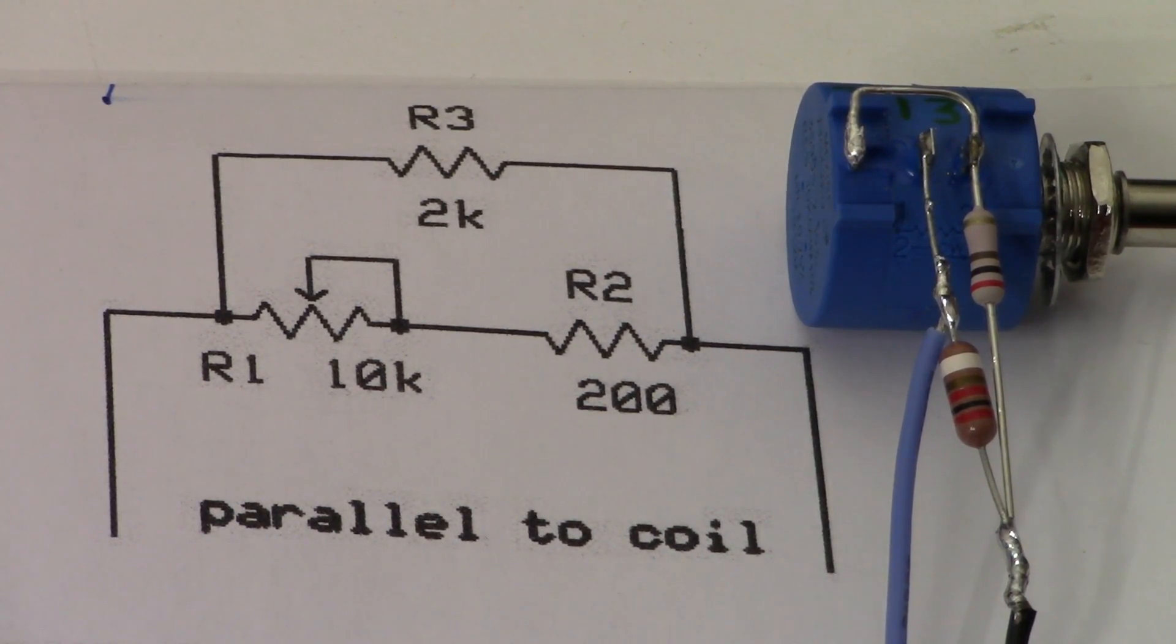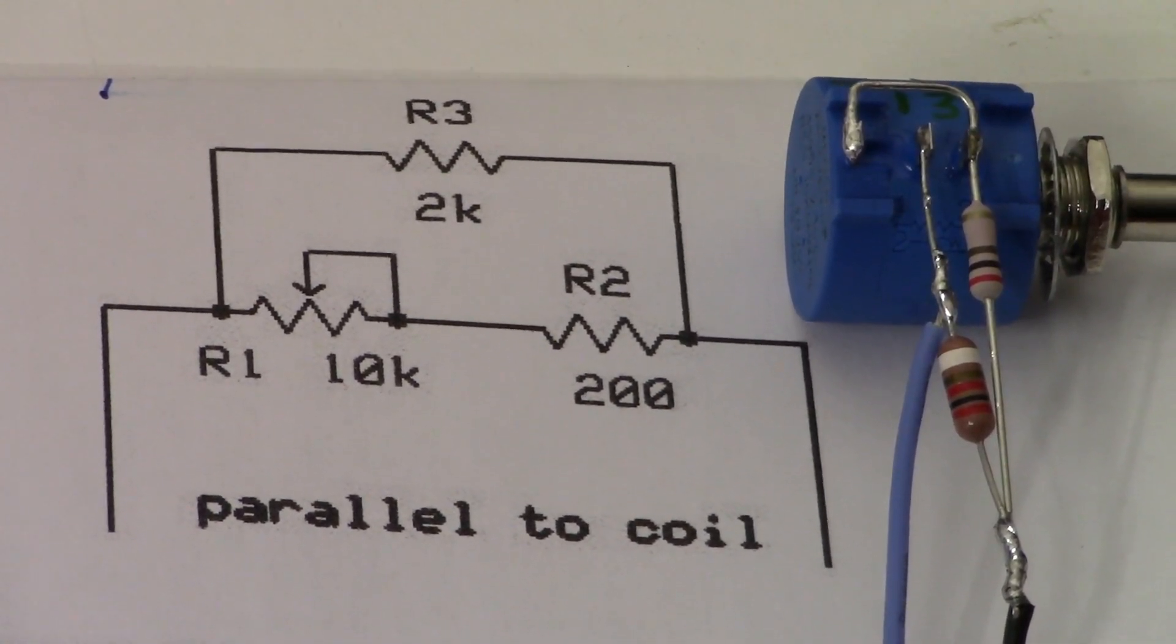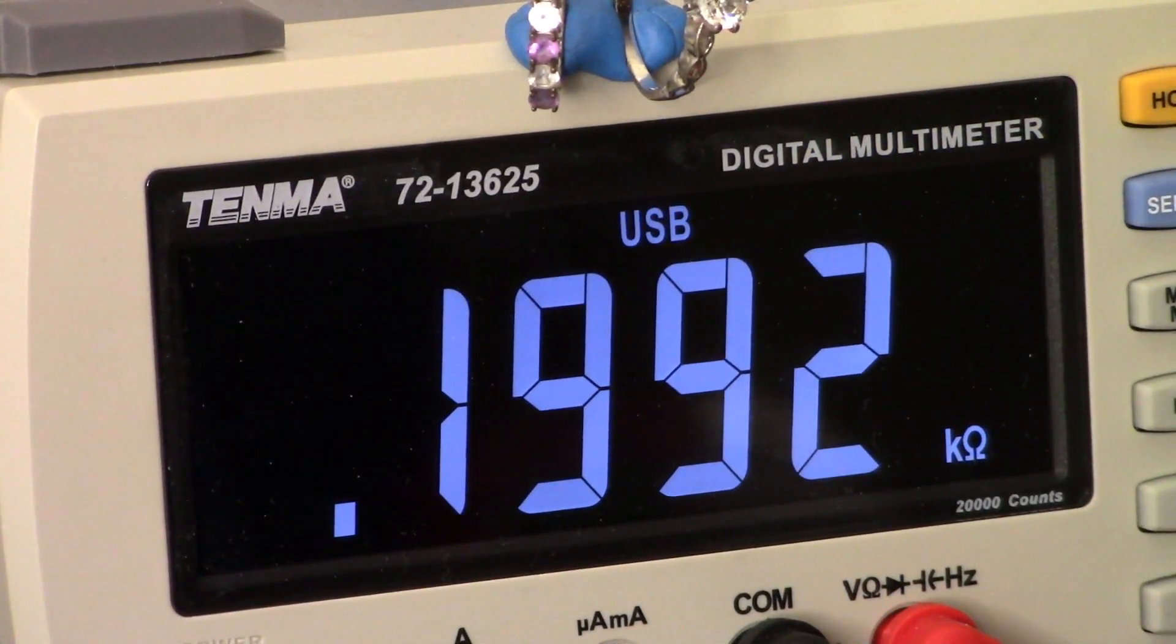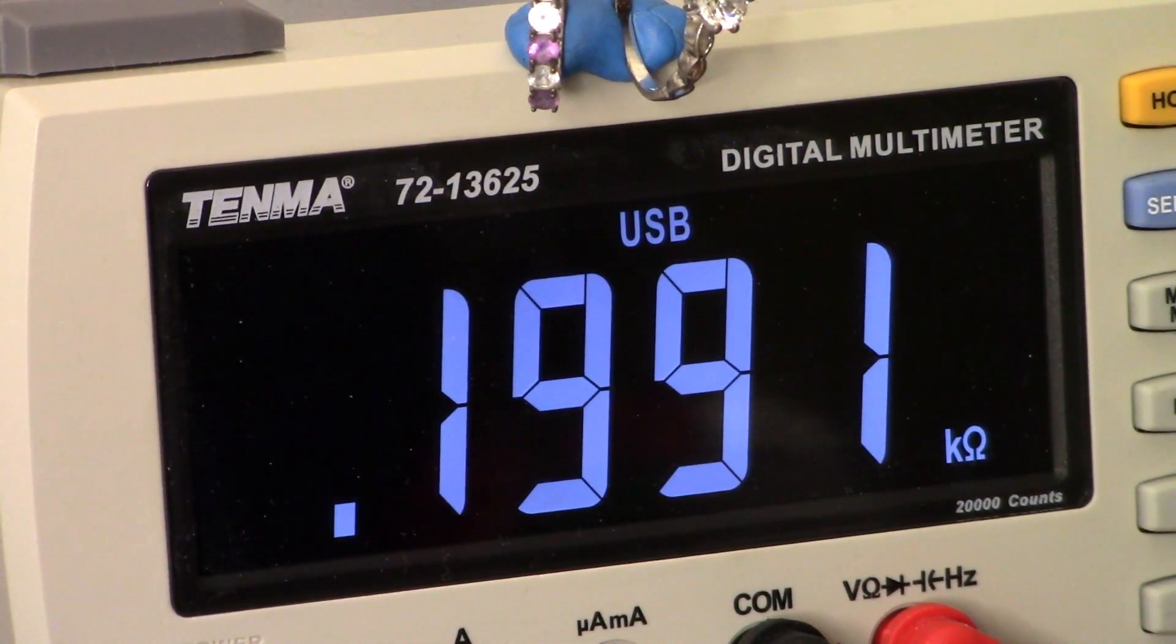Okay, here's the low point. I'm on a 2k setting, so I've got 199 ohms. And let's advance it, we'll go the full range of the multi-turn pot.